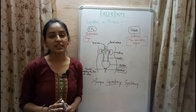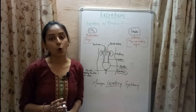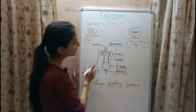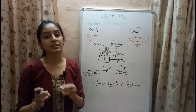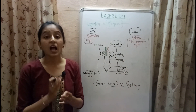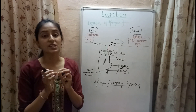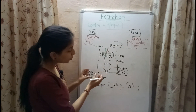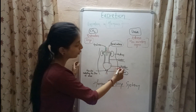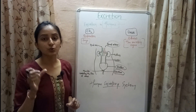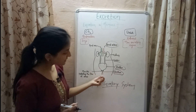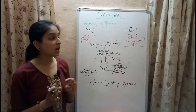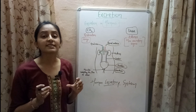Dirty blood containing waste products like urea, excess salt, and excess water enters the kidney through the renal artery. Inside the kidney, this blood is filtered and the waste products form a yellowish liquid known as urine. This urine then passes to the ureter and is stored in a bag-like structure called the bladder. From the bladder, urine passes to the urethra, from where it is excreted from the body.